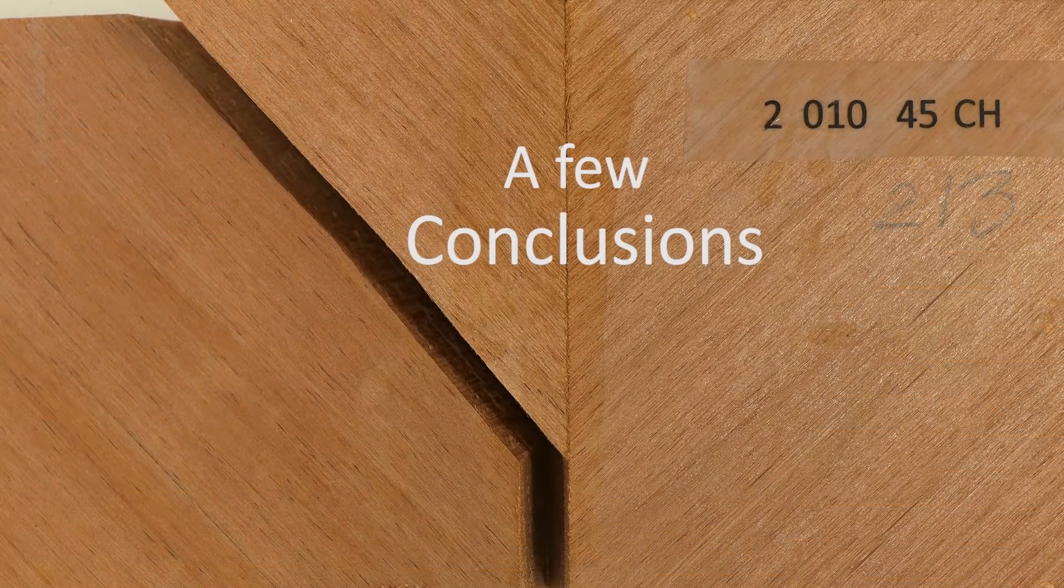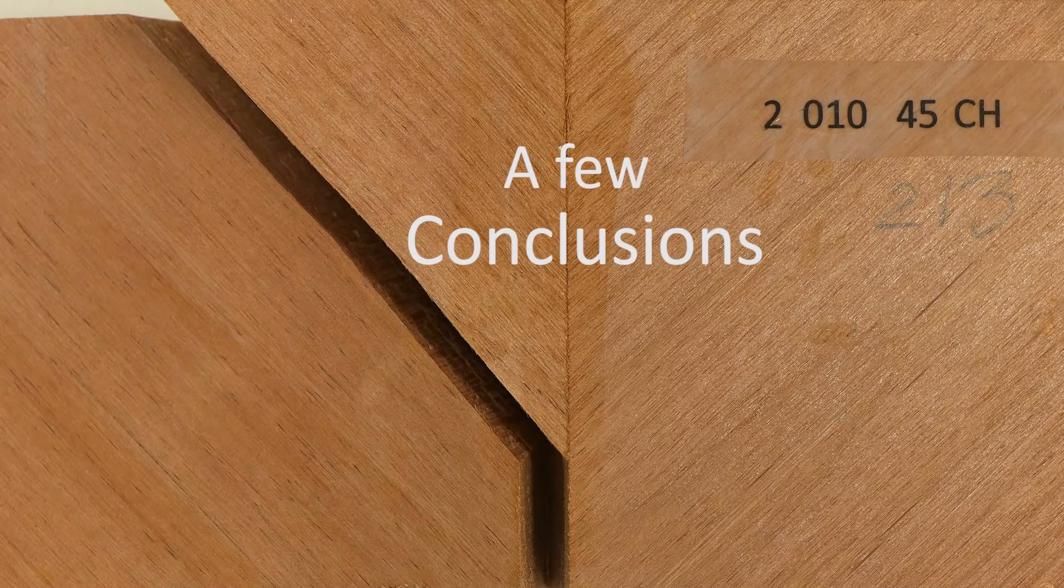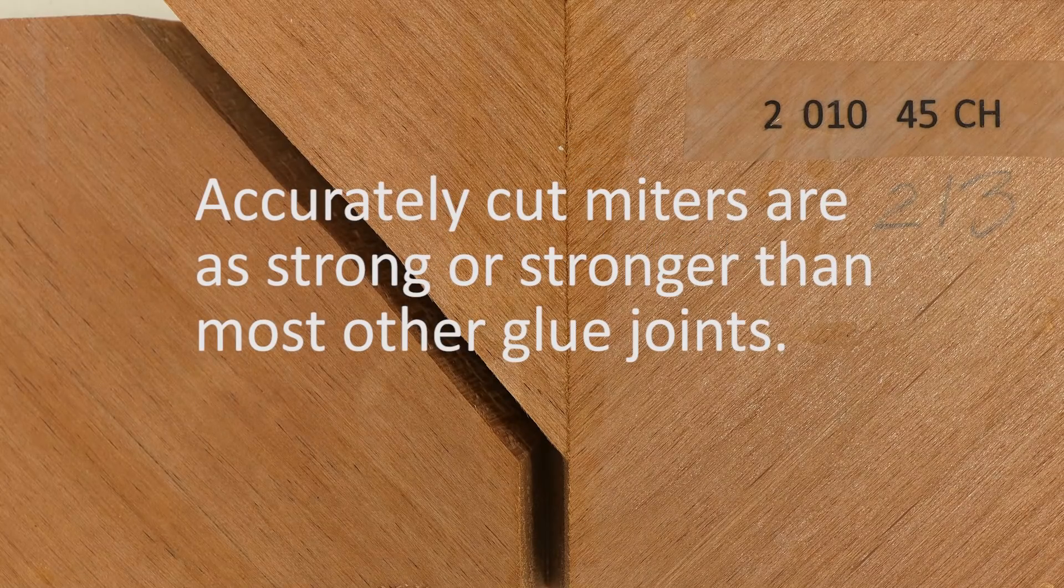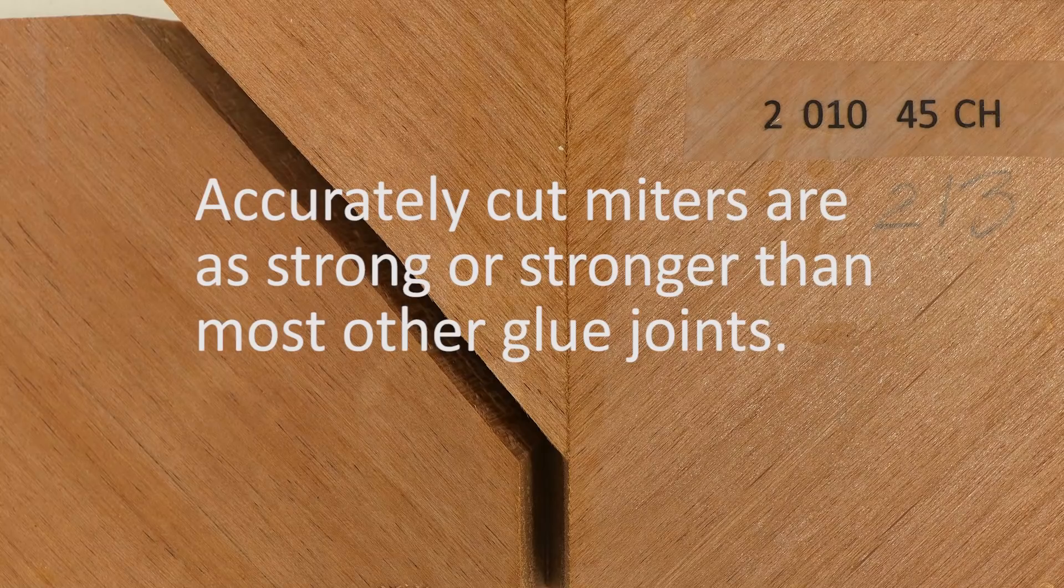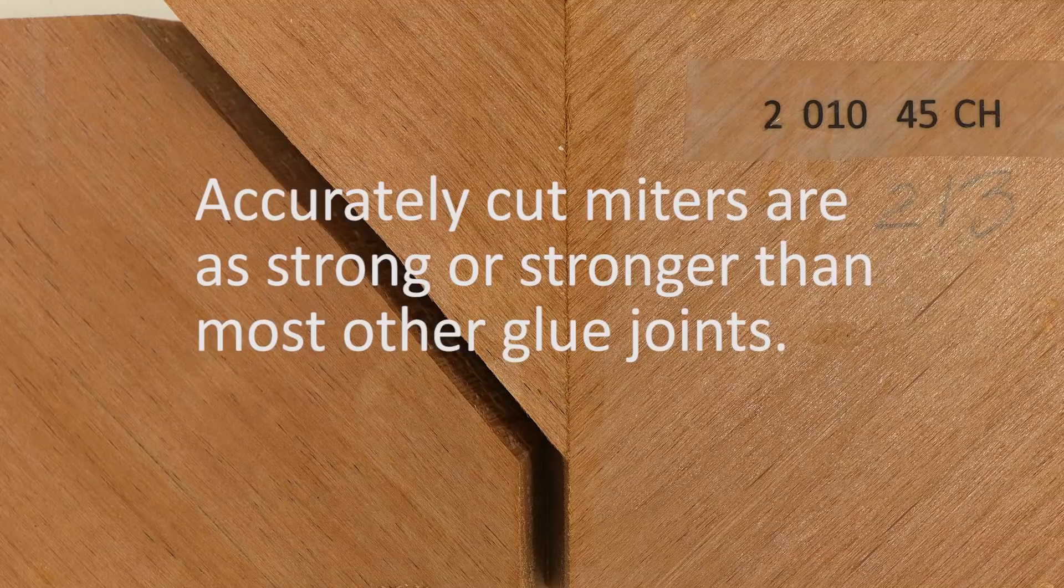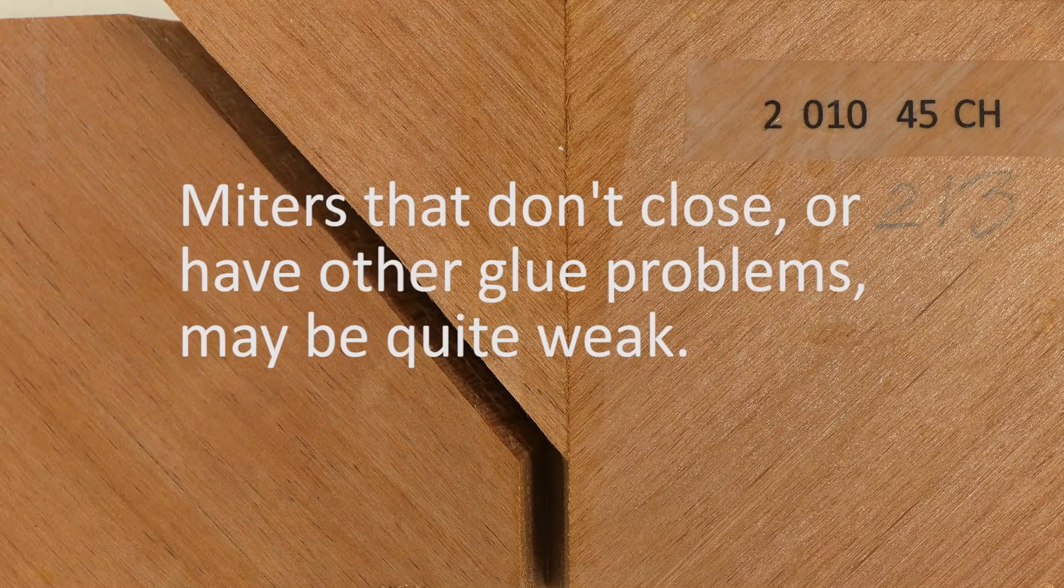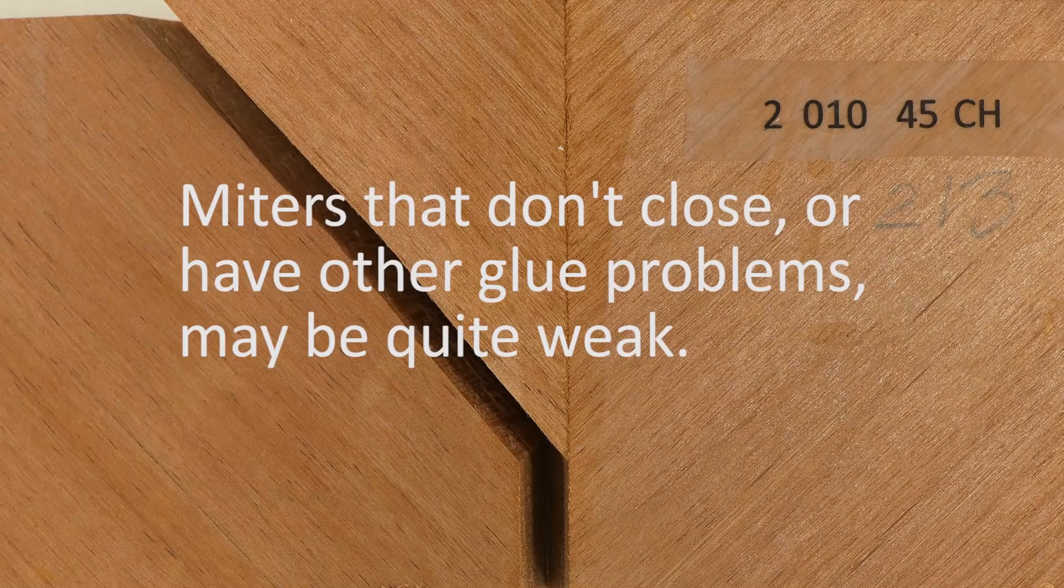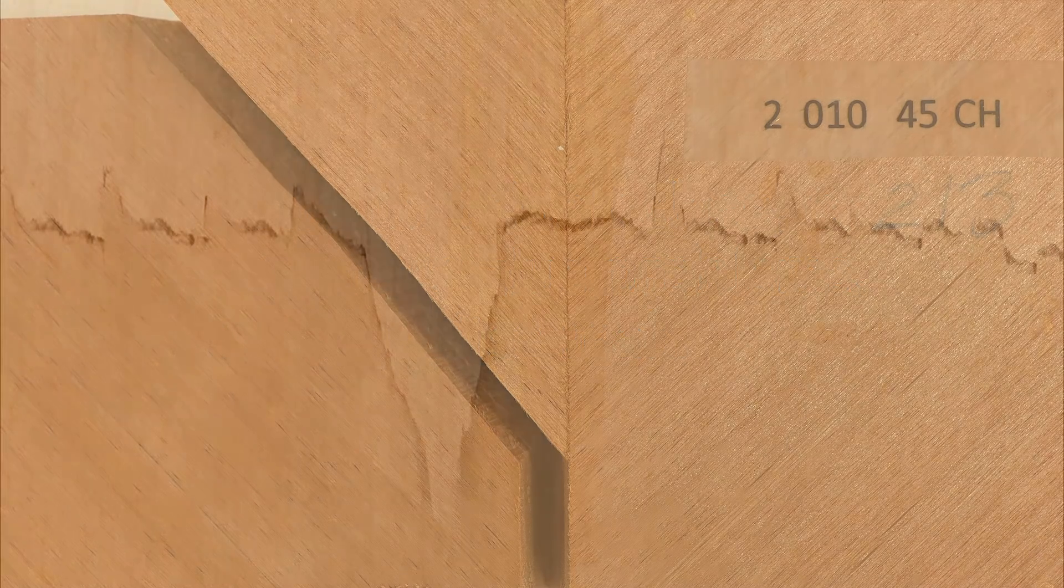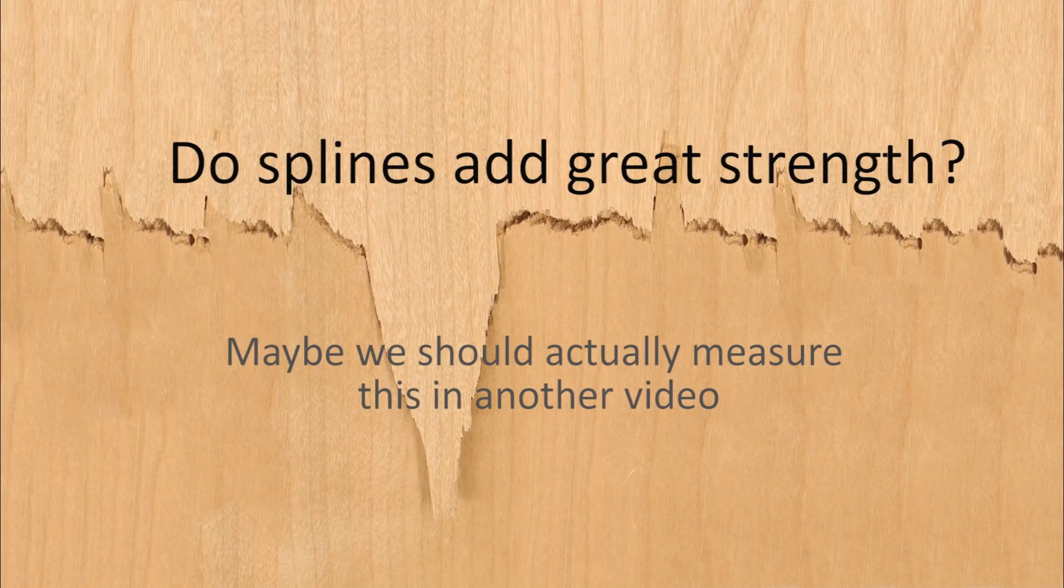So in conclusion, butted miter joints that are perfectly cut should be as strong or stronger than most of the other simple joints that you regularly use. If you failed to achieve flawless cuts, then maybe you should consider adding splines. If your accuracy was terrible, then the spline may be the only thing holding the joint together. How much strength do splines add? Well, that can be a subject for future research. My preliminary tests suggest we could be in for some surprises.